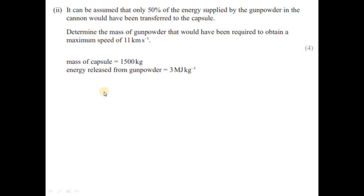It can be assumed that only 50% of the energy supplied by the gunpowder in the cannon would have been transferred to the capsule. Determine the mass of gunpowder required to obtain a maximum speed of 11 km/s. The mass of the capsule is 1500 kg and the energy released from the gunpowder is 3 million joules per kg.